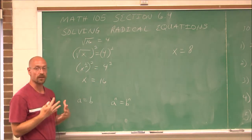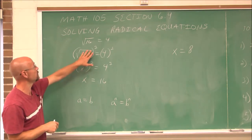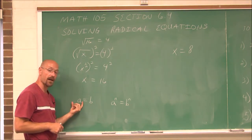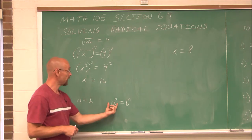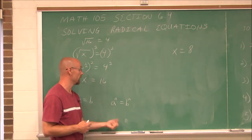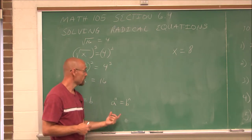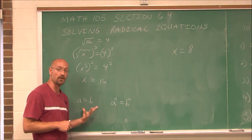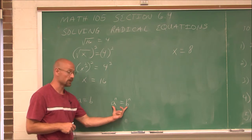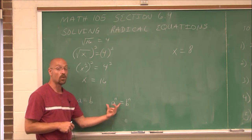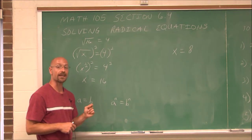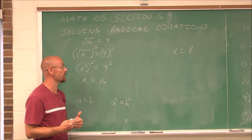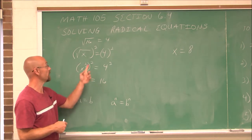One thing we have to be aware of is we used the property of equality — what we do to one side, we do to the other. When we added, subtracted, multiplied, or divided either side of an equation, we didn't change the equation. But when we raise both sides to some power, we actually do change it. What we get is a related equation — it contains the same solutions but may have additional solutions, and those are called extraneous. That's why it's extremely important to check our answer.